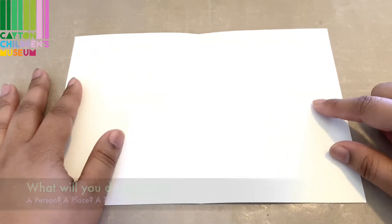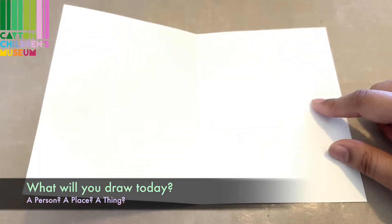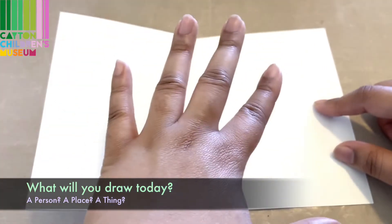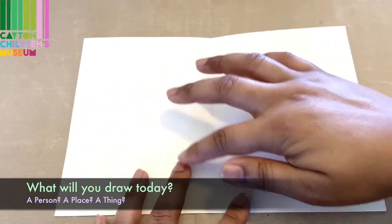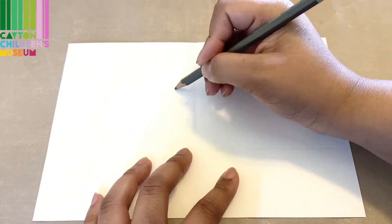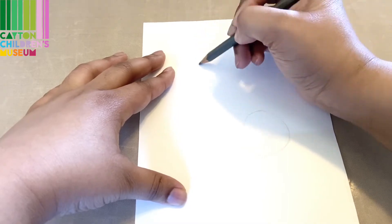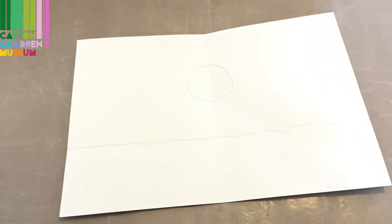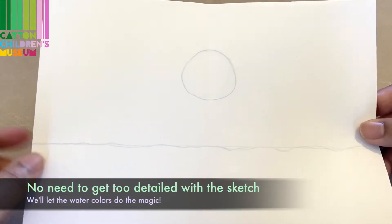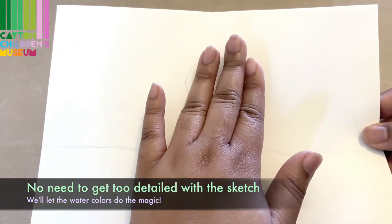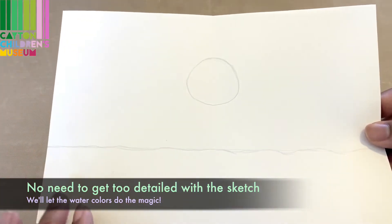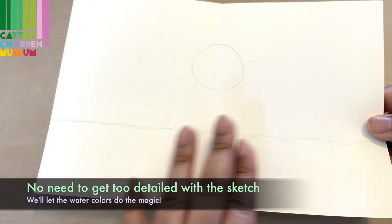I'm going to take my pencil and think about what kind of scenery that I'm going to be drawing. And it could be a person, it could be a place, it could be a thing. Whichever you choose, I'm going to sketch the sun and moon over the ocean water. Your sketch does not need to be perfect. You just need to know where you'll be laying down your colors.